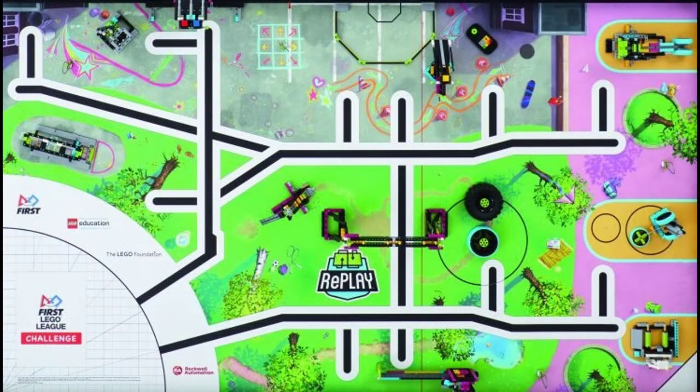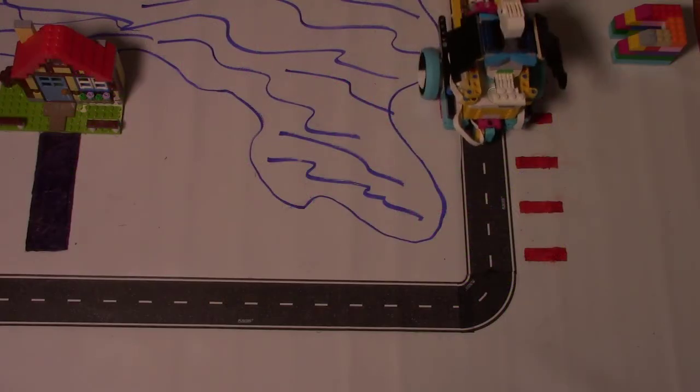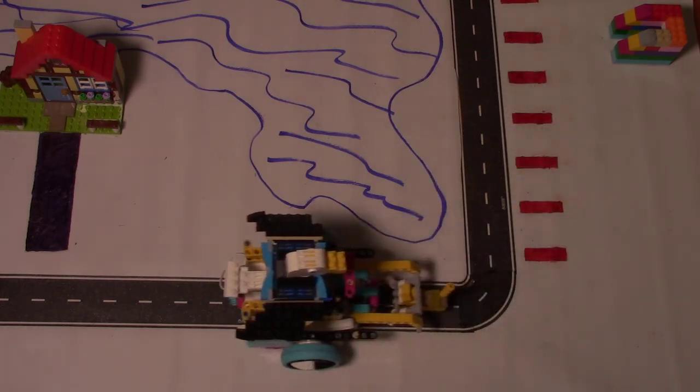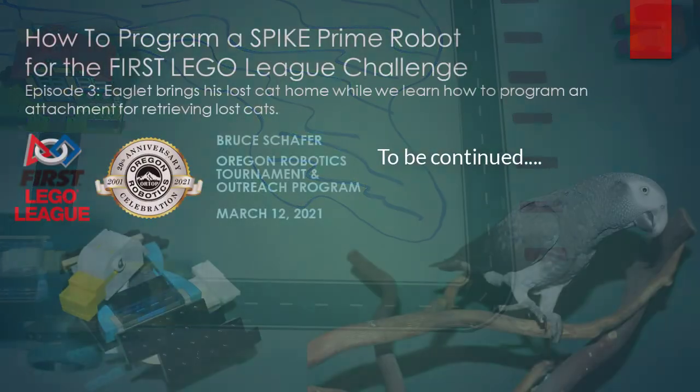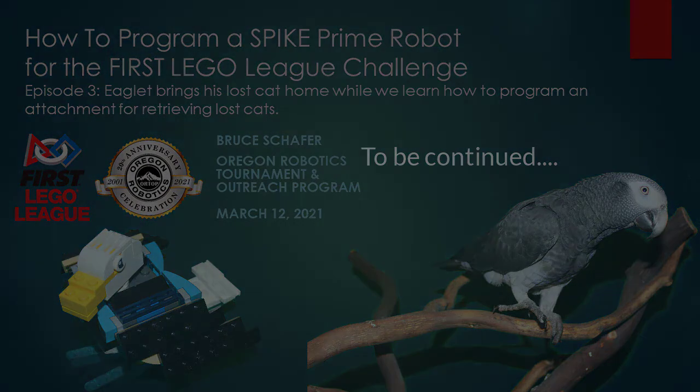These steps are very similar to what we need to do to score points on the annual First Lego League playing field. But our program didn't work every time. For the same reason we'd like to score points every time, we'd like to retrieve Yellow every time. Next time we'll try using a sensor to make chariot's navigation more reliable.